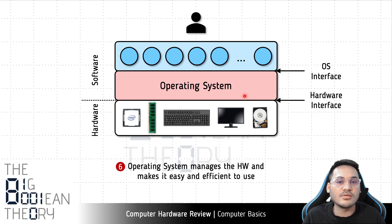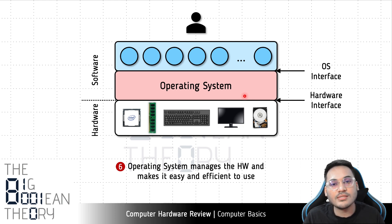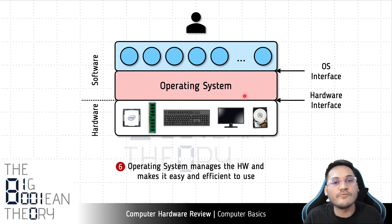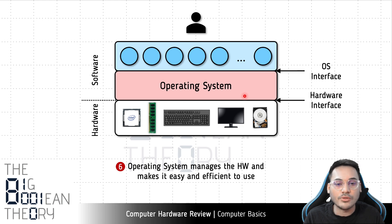So now we have the very basic definition of an operating system: it is a piece of software, a layer of software, that manages the hardware and makes it easy and efficient to use. The hardware interface is very complex, and the operating system provides a simpler interface over it — making the computer system easy to use. It also manages all the resources, ensures fair and proper allocation, and maintains good performance — making the system efficient to use. These are the two fundamental responsibilities of the operating system.